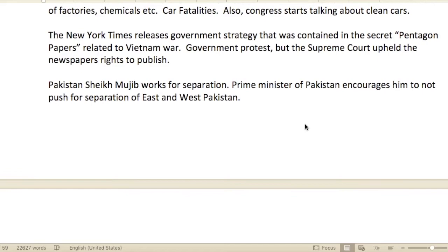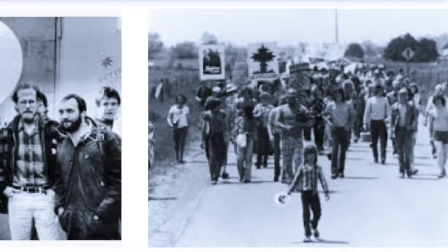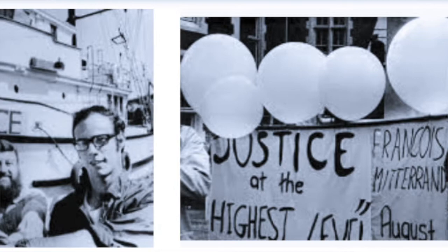We see a lot more people around the planet using up resources and fossil fuels. The New York Times released a government strategy contained in secret — the Pentagon Papers, related to the Vietnam War — but the Supreme Court upheld the newspaper's right to publish.